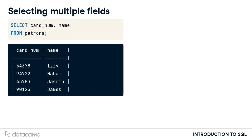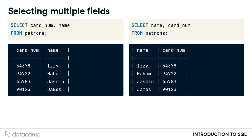To select multiple fields, we can list multiple field names after the SELECT keyword, separated by commas. For example, to select card number and name, we'd list both field names in the order we'd like them to appear in our result set. Notice that this does not have to match the order the fields are presented in the table. Listing name before card num means that name appears first in the results.